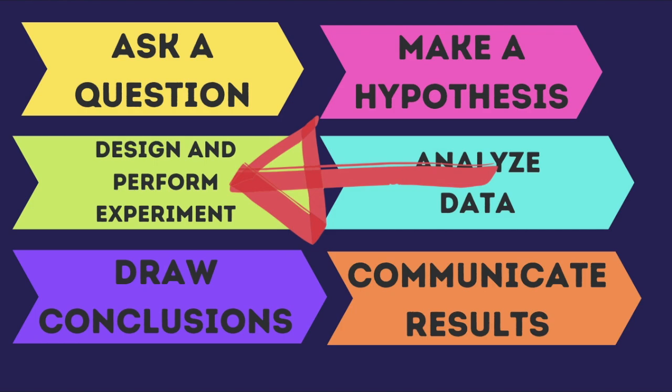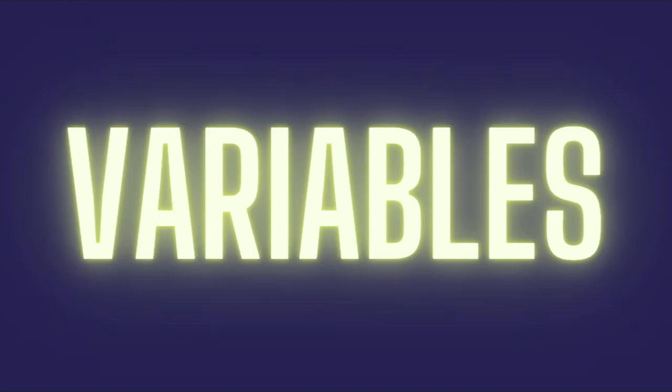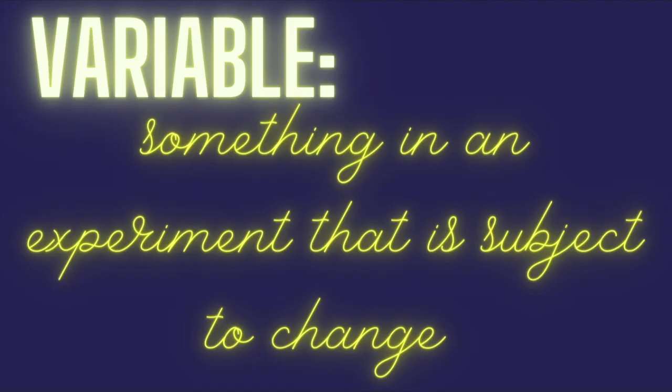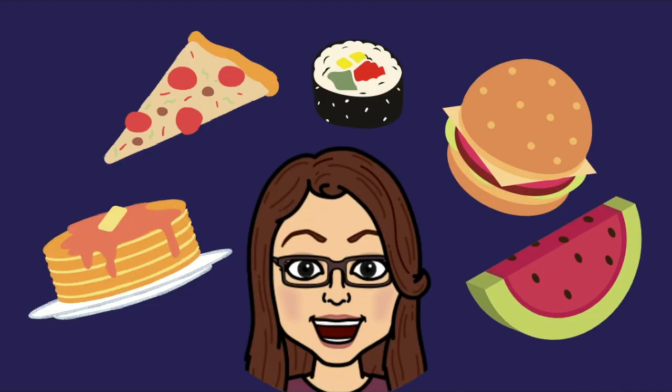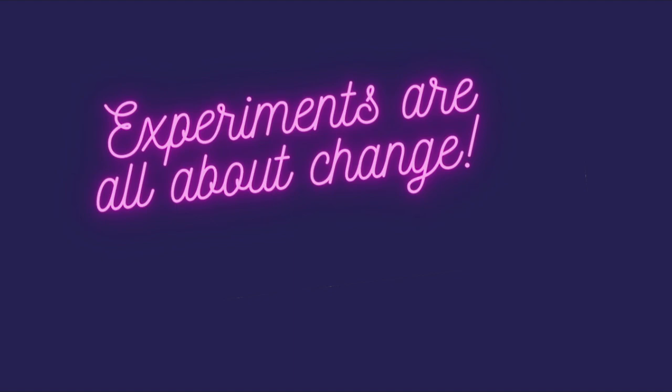Here's where variables come into play. A variable is something in an experiment that is subject to change. When a person says something varies, they mean that it changes. Like if you ask me what my favorite food is, I might say I like various types of food or my favorite varies from day to day.